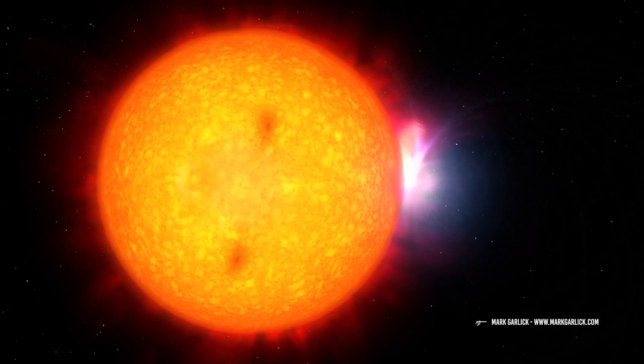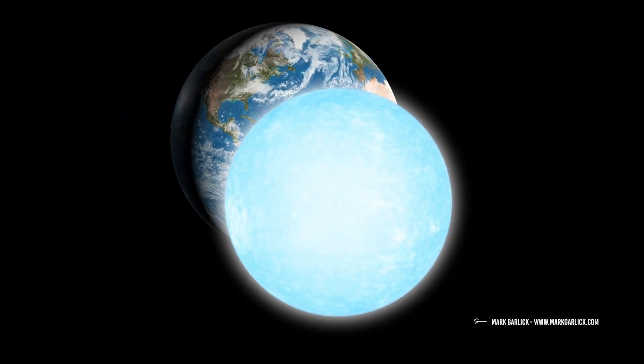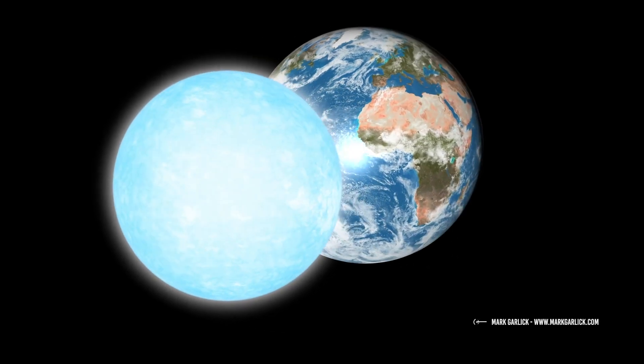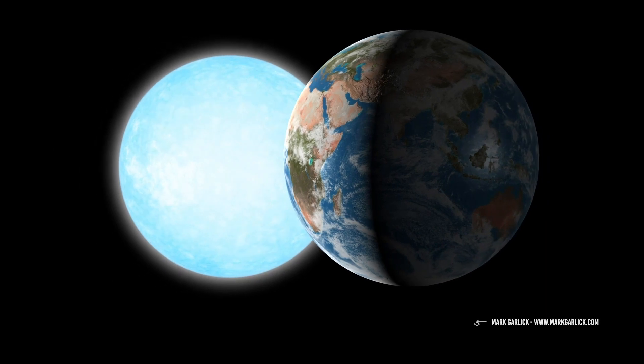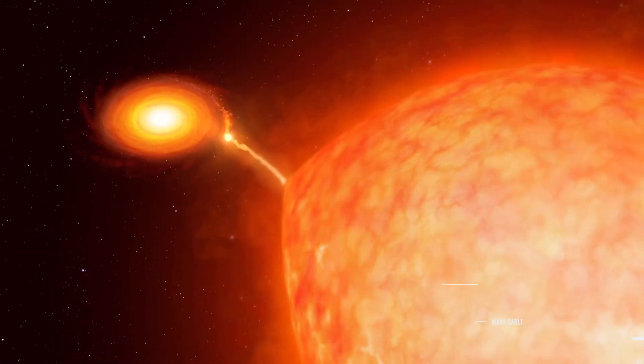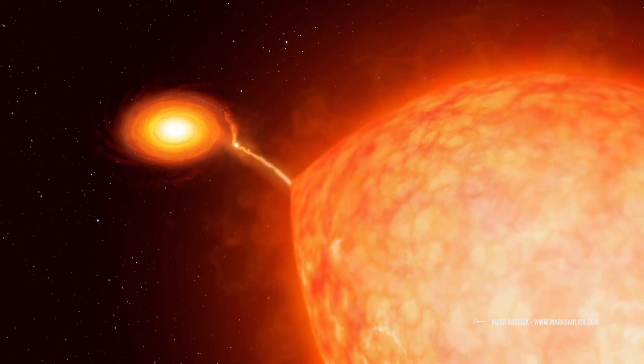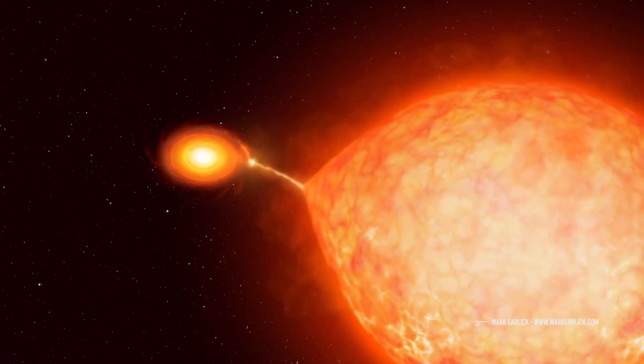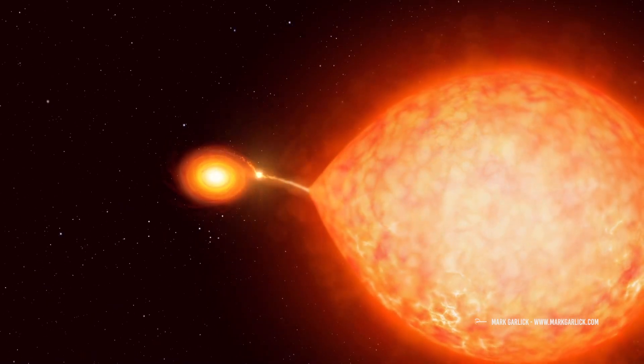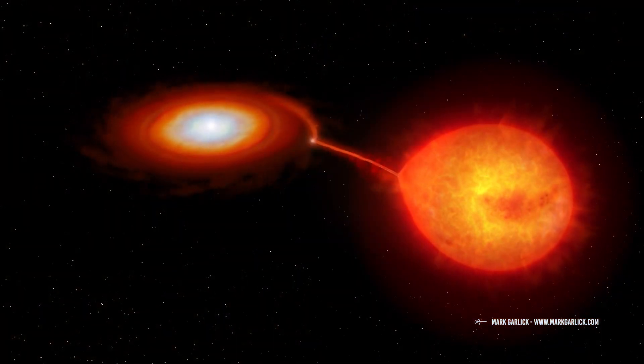White dwarfs have a diameter similar to that of the Earth but a quantity of matter equal to that of the Sun. Therefore, they have a great density and a gravitational force tens of thousands of times higher than Earth's. Thanks to the intense gravitational field, the white dwarf attracts hydrogen and helium from the outer layers of the red giant to its surface, increasing mass and volume.